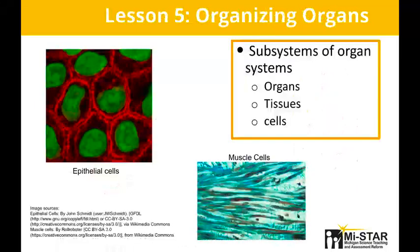For Lesson 5, students dive deeper into the subsystems of the organ systems — organs, tissues, and cells. Students discover how different types of cells make up different tissues and how different types of tissues make up different organs. Students use this information along with a CDC update to determine that the cells of the nervous tissue are infected with the virus.